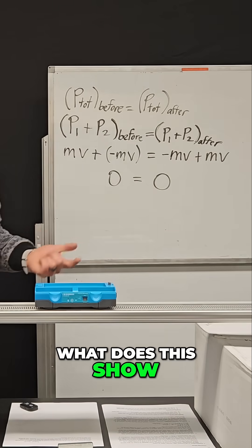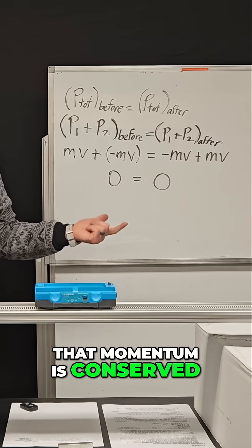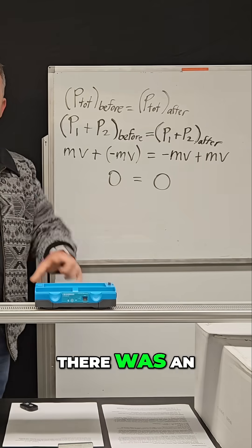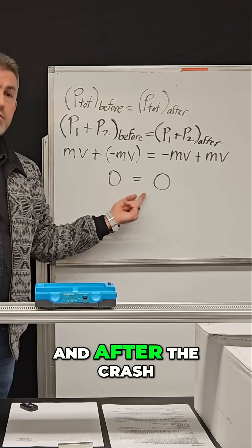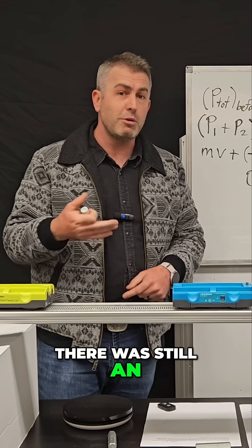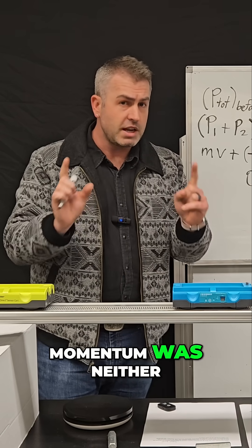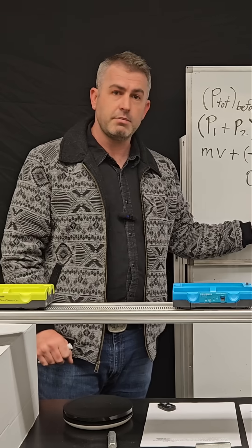So what does this show? Well, it proves this principle that momentum is conserved. Before the crash, there was an overall momentum of zero. And after the crash, there was still an overall momentum of zero. Momentum was neither created nor destroyed. It stayed the same.